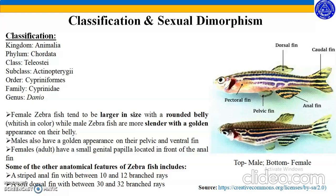Males also have a golden appearance on their pelvic and ventral fin. Adult females have a small genital papilla located in front of the anal fin. Apart from this, a striped anal fin with between 10 and 12 branched rays and a dorsal fin with between 30 and 32 branched rays are also some of the anatomical features of zebrafish.